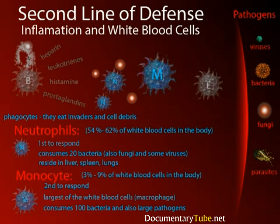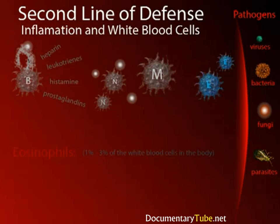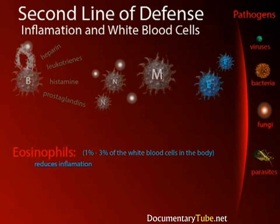These white blood cells hang out in the tissues, near vessel walls, and around the lymphatic vessels. Eosinophils are also part of our innate immune response. These cells reduce inflammation. Why would the body have one type of cell that promotes inflammation and another that reduces it? Well, inflammation can be a good thing, but too much inflammation can be very bad. Thus, inflammation must stay under control. Eosinophils contain enzymes that tend to break down inflammatory agents, keeping inflammation under control.